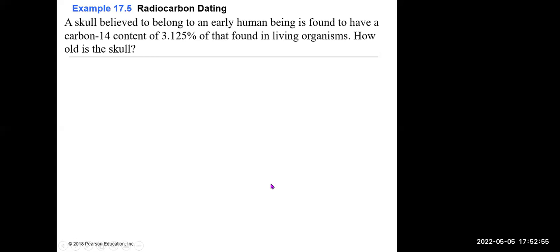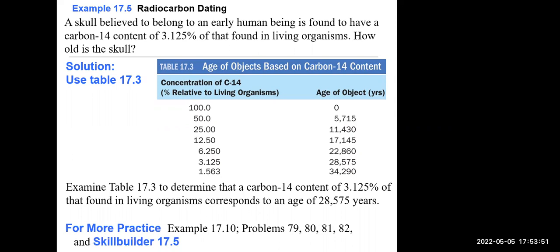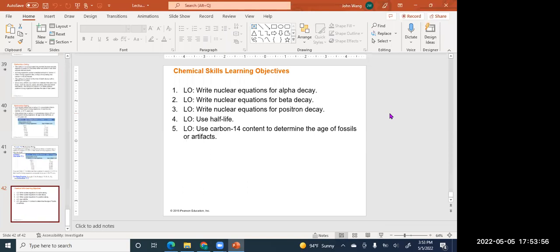For example, a skull is found and the carbon-14 content compared to a living organism is only 3.125%. Starting from 100% and dividing by 2 each half-life — 100, 50, 25, 12.5, 6.25, 3.125 — we count five half-lives. Five half-lives × 5,715 years = 28,575 years. Therefore the skull is approximately 28,575 years old.